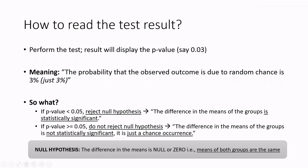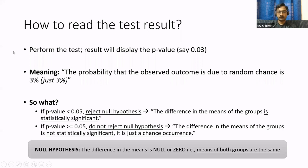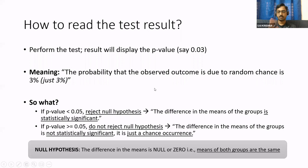Regarding why we take 0.05 as the cutoff: when you say five percent, anything with a random chance probability of less than five percent is considered statistically significant. You're giving very little room — just five percent — for a random chance occurrence. If you allowed 20%, that wouldn't be appropriate because too many random outcomes could pass. That's why five percent is taken as the standard significance level or cutoff.